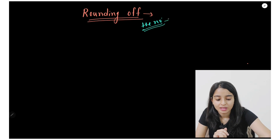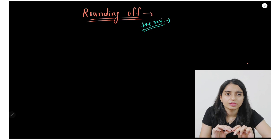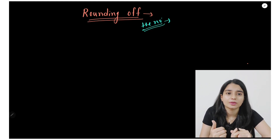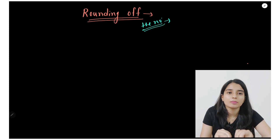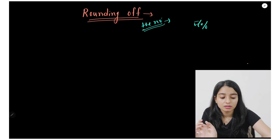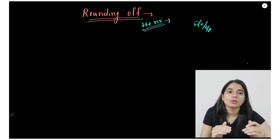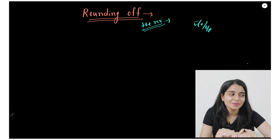Why do we need rounding of numbers? We have already found significant figures, but then what is the need to round off? When we do arithmetic calculations — addition, subtraction, multiplication, division — the number of significant digits in the input is not the same as in the output. So we need to reduce significant figures in the output, and that is why this rule is necessary.